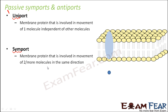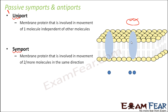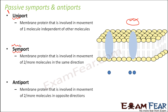The second type is symport — a membrane protein involved in movement of two or more particles in the same direction. This type of protein allows particles to move through it only if there are multiple particles moving in the same direction. The word symp is related to synchronized or similar — multiple molecules are synchronized in the same direction. The proteins are called symportic proteins and the phenomenon is called symport.